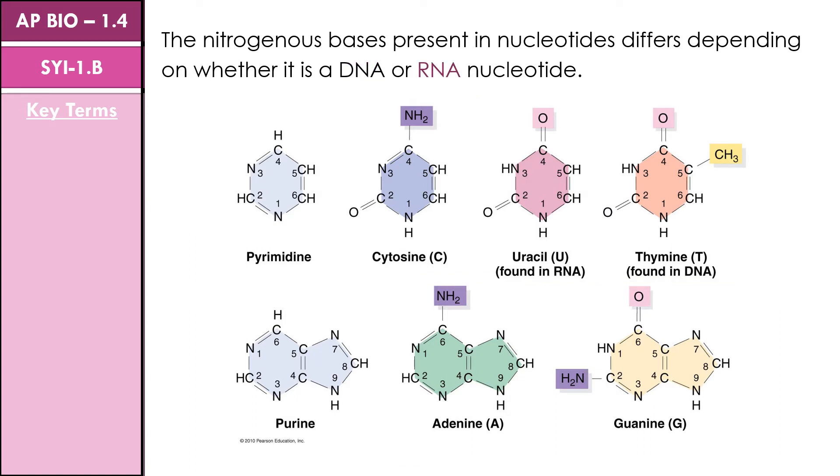RNA also contains adenine, cytosine, and guanine, but the fourth base in RNA is uracil rather than thymine.